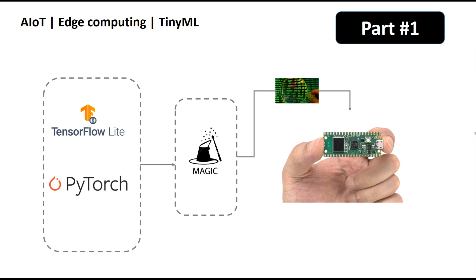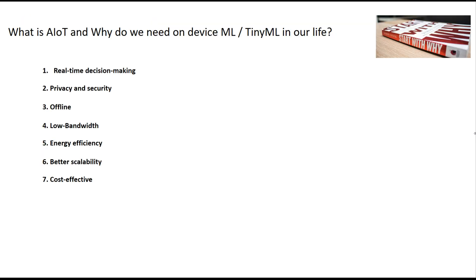Today I would like to start a new series of videos about AI and the Internet of Things, which is called AIoT — sometimes called edge computing or TinyML. We will start from the framework perspective: what kind of framework we can use, how we can compress a model, how we can write low-level programming, and how we can implement this model in a tiny microcontroller.